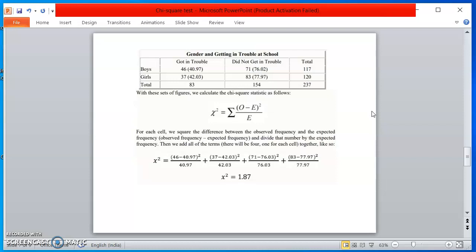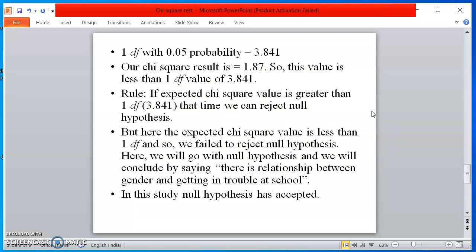And now, what do you need to do? We know 1 DF with 0.05 probability equals 3.841. Then next, our chi-square result came 1.87. So this value is less than 1 DF value, right? That is 3.841. The rule is that if expected chi-square value is greater than 1 DF, that is 3.841, that time we can reject null hypothesis.